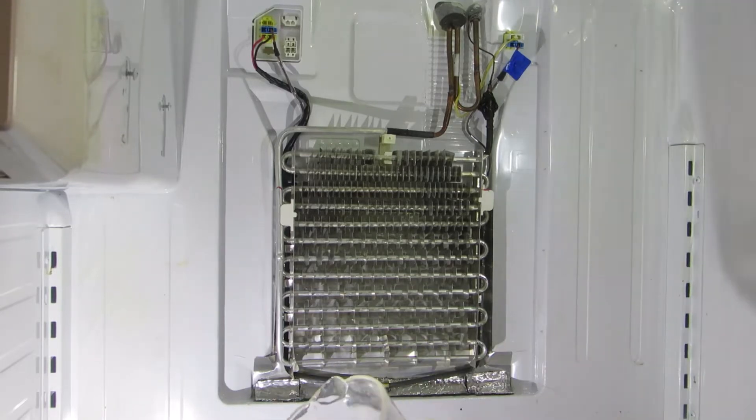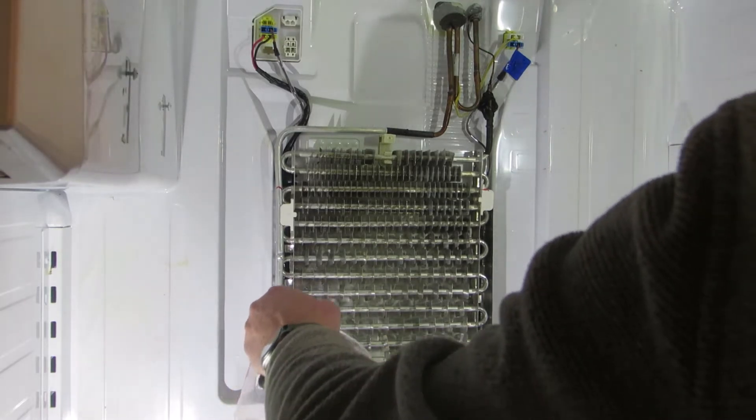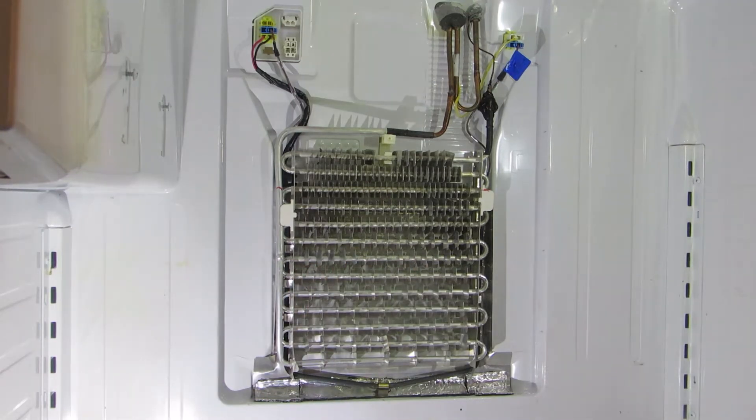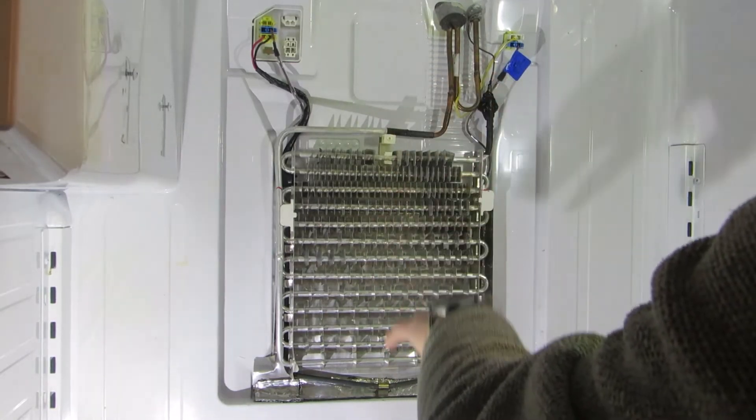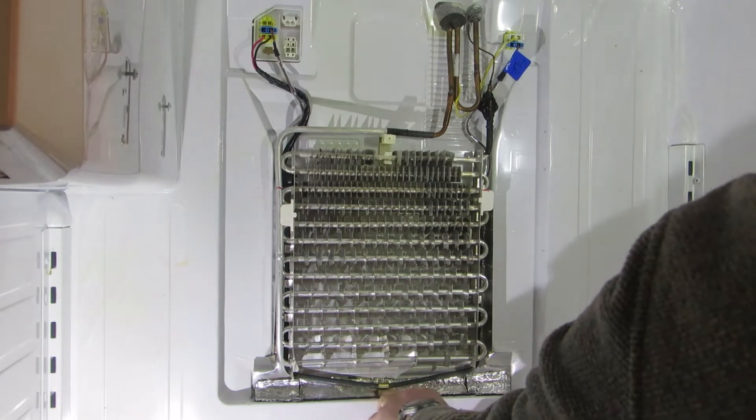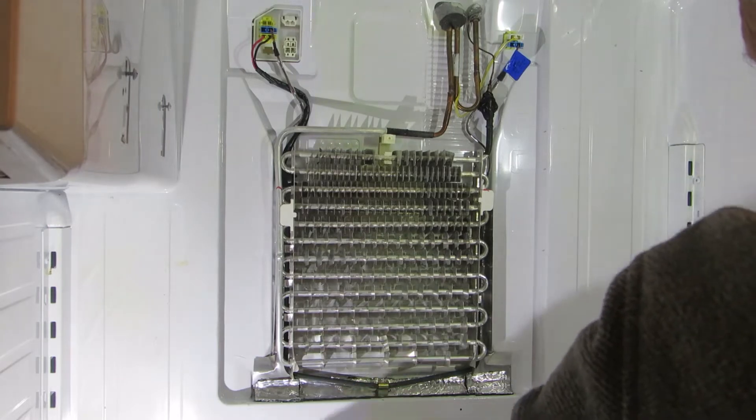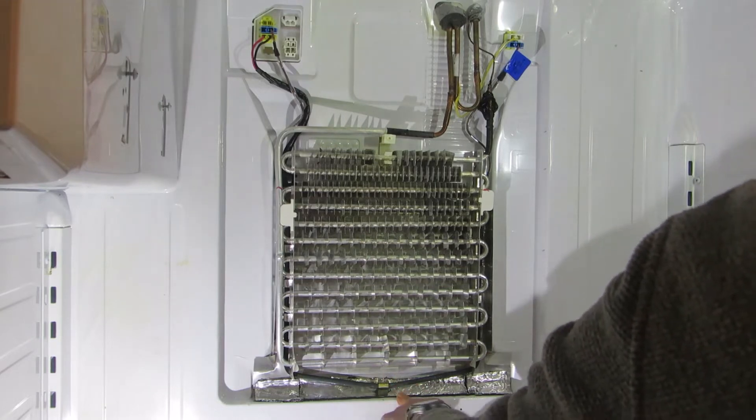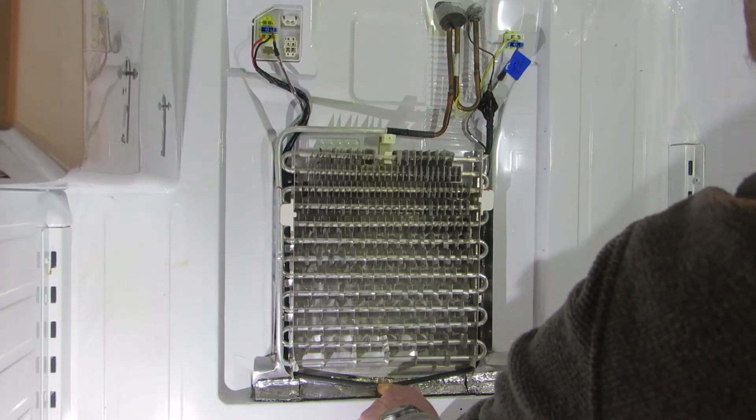Grab a measuring dish, jug, whatever it is, put a couple of cups of water in, half a liter, and pour it as best you can down here pretty quickly. That water should drain because when you go into the defrost, there'll be quite a bit of water coming down here. If it can't drain fast enough down there, it is going to seep over here and into your crisper. So ensure that that is clear.